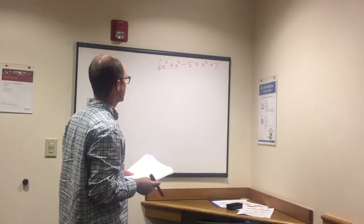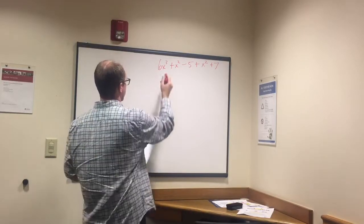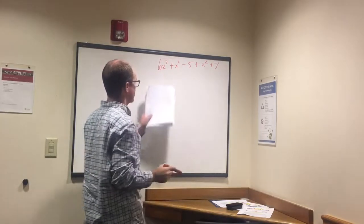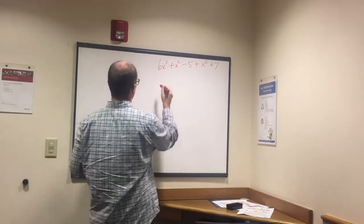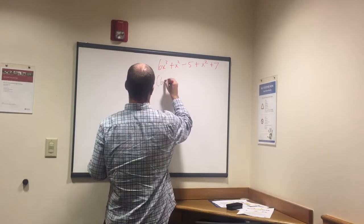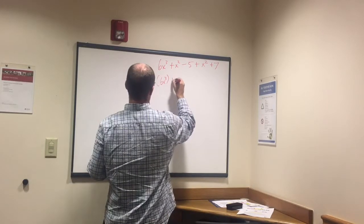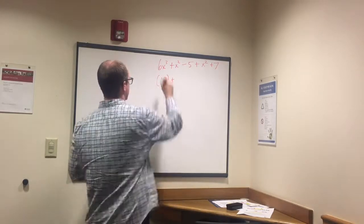Do we have any exponents that have 3 except for 6x to the third as we look through here? No. So 6x to the third by itself, we'll cross that out.